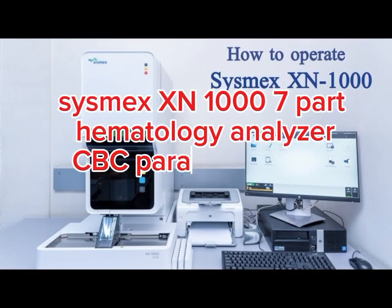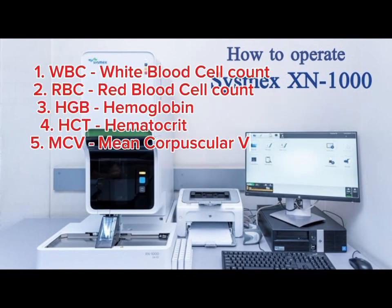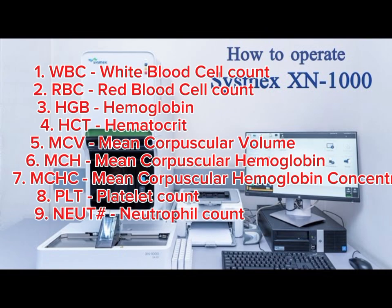Mindray MEX XN-1007 Hematology Analyzer CBC Parameters and Their Abbreviations. 1: WBC – White Blood Cell Count. 2: RBC – Red Blood Cell Count. 3: HGB – Hemoglobin. 4: HCT – Hematocrit. 5: MCV – Mean Corpuscular Volume. 6: MCH – Mean Corpuscular Hemoglobin. 7: MCHC – Mean Corpuscular Hemoglobin Concentration.